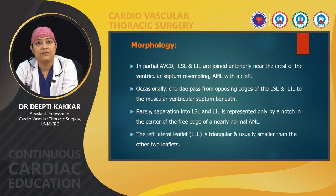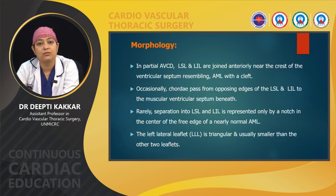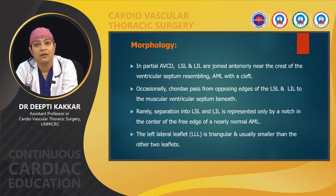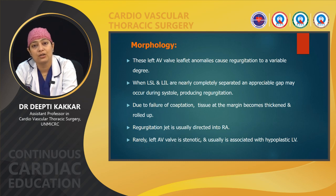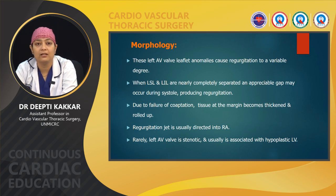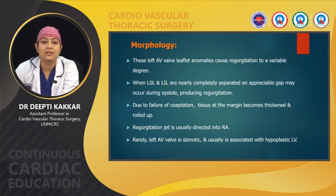These left AV valve leaflet anomalies lead to variable degrees of regurgitation. When they are nearly completely separated, there may be an appreciable gap during systole causing significant regurgitation. Because of failure of coaptation, the tissue at the margin becomes thickened and rolled up, and the regurgitation jet is usually directed into the right atrium. Rarely, the left AV valve may also be stenotic, which is usually associated with a hypoplastic LV.